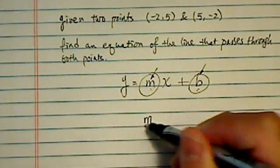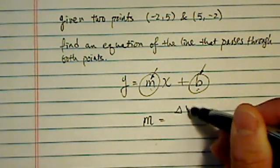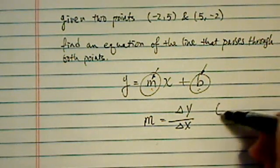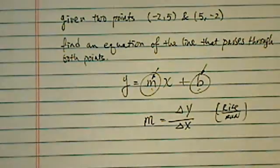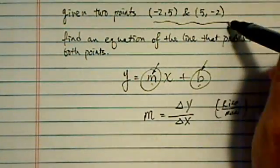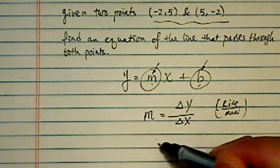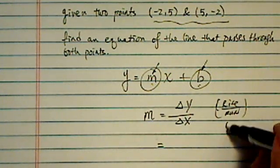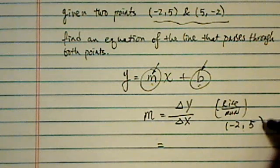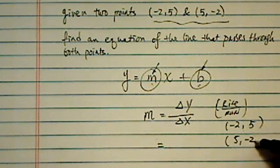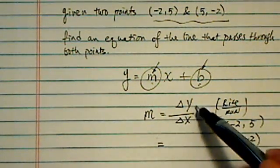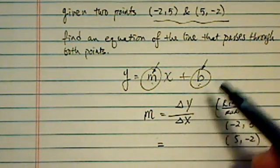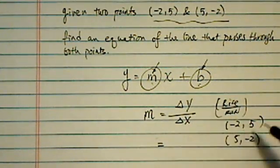So let's do the easiest one first: slope. Slope is change in y over change in x, commonly referred to as rise over run. Now, which point you pick first doesn't matter — what matters is you stay consistent with it. What I tell my students is: write the points and stack them on top of each other. That way you don't get distracted about which point is one and which one is two. The reason order doesn't matter is because it's a division, so as long as you have the same order, you get the same answer in the end.